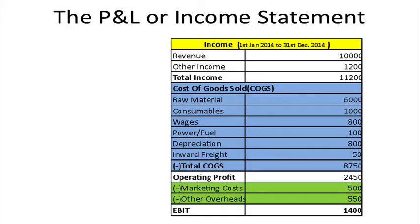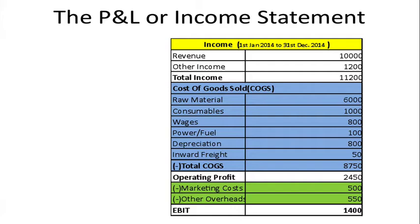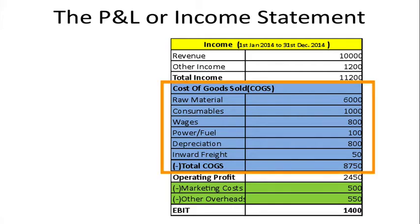A profit and loss account gathers all the income, subtracts all the expenditure, and what is left is either profit or loss. In an actual profit and loss account, the top line is the revenue or income part — that is why when you talk of the top line of a company, you mean the total sales or total revenue it has made.